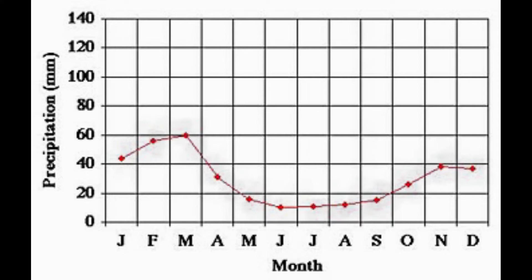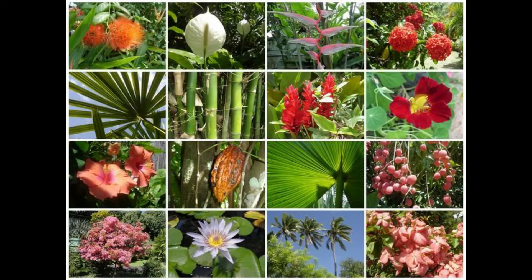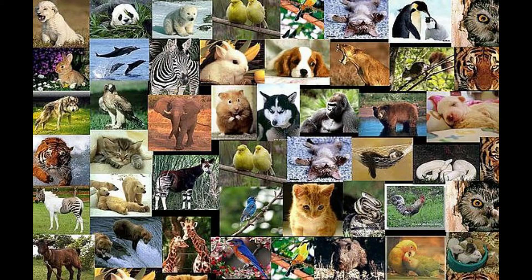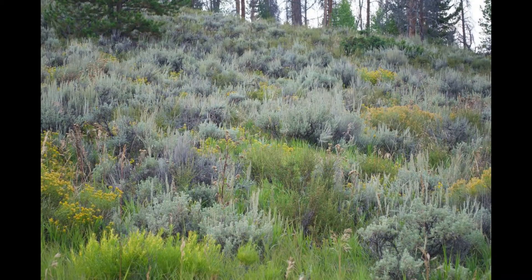After March, in April precipitation decreases a lot, down to 30 millimeters. In May it decreases further to 18 or 19 millimeters. From June the line stabilizes until October, when it increases up to 24 or 25 millimeters. In November it increases again to about 39 millimeters, and in December it decreases slightly to 37 or 38 millimeters.